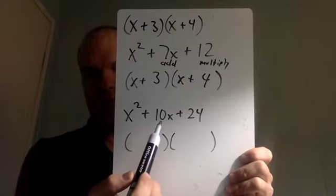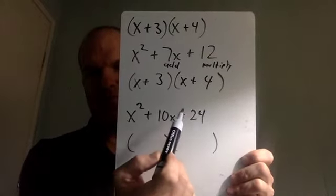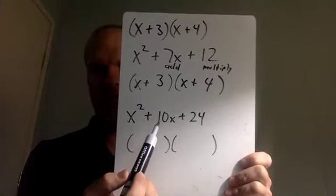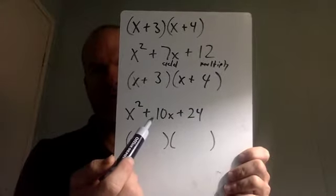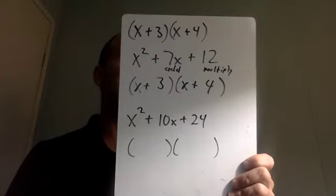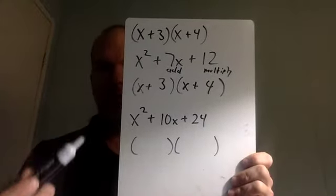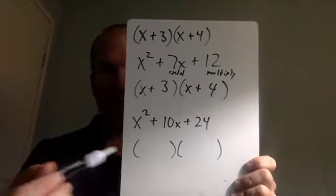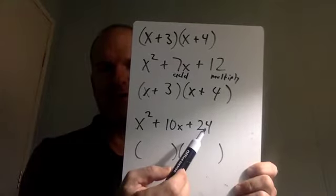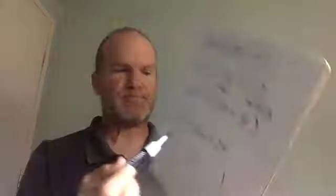We're trying to find two numbers that add to give 10 and multiply to give 24. There are many pairs that add to 10 — 1 and 9, 2 and 8, 3 and 7, 4 and 6. It's usually easier to look for combinations that multiply to give the last term, 24: there's 1 and 24, 2 and 12, 3 and 8, and 4 and 6.